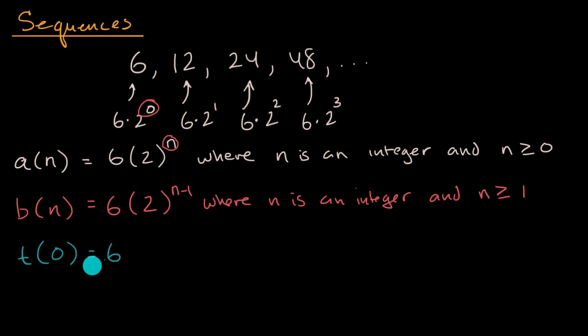T of zero is equal to six. And then we could say t of n is equal to two times t of n minus one.